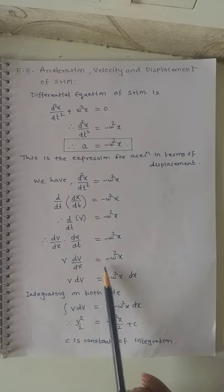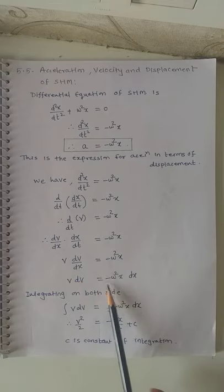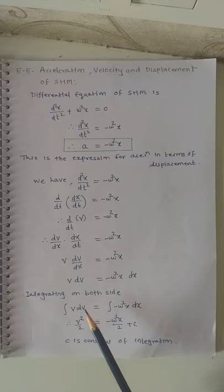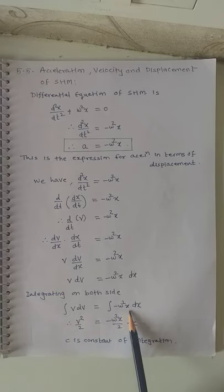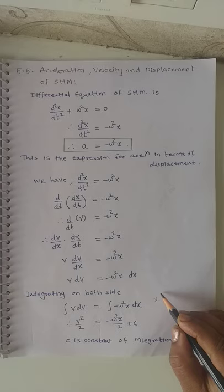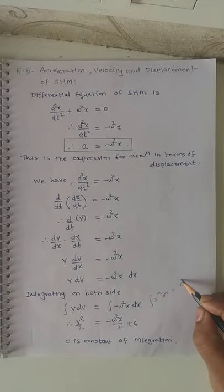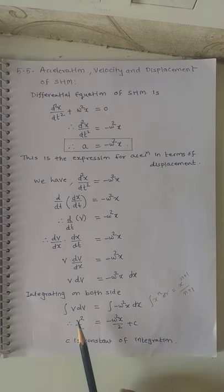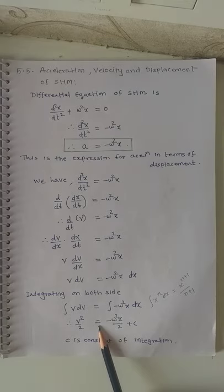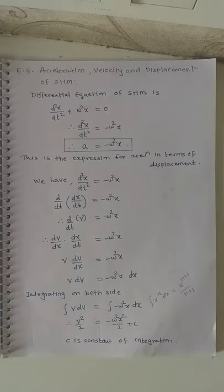Rearranging, v dv = −ω²x dx. Now integrating both sides to get the desired expression for velocity: the integration of v dv = −ω² ∫x dx. Integration of v gives v²/2. Using the power rule (∫xⁿ dx = xⁿ⁺¹/(n+1), here n = 1), we get v²/2 = −ω²x²/2 + C, where C is the constant of integration.